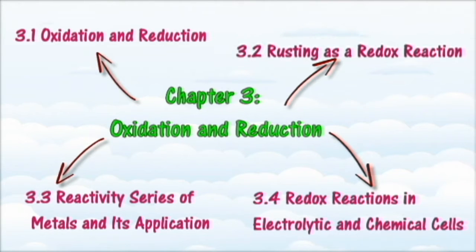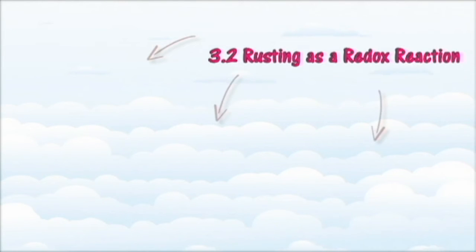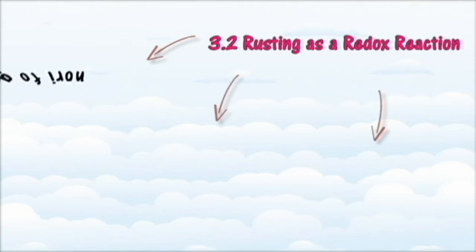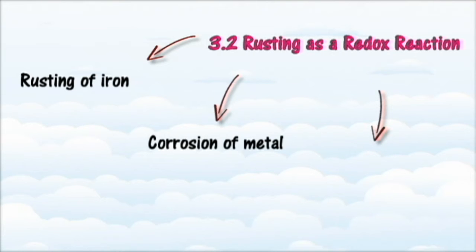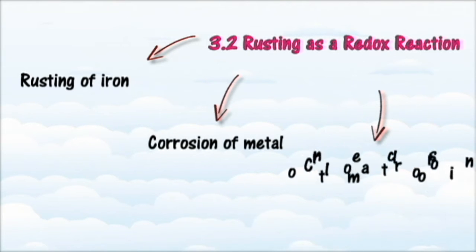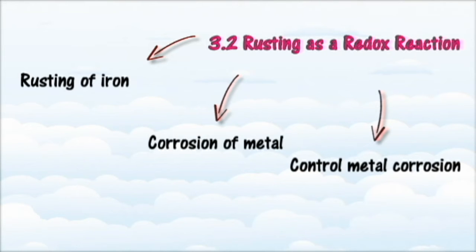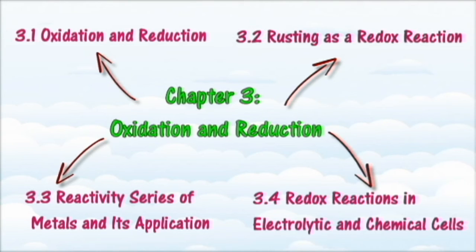In Section 3.2 we will learn about rusting as a redox reaction. At the end of this section you should be able to state the conditions for the rusting of iron, state what corrosion of metal is, describe the process of rusting in terms of oxidation and reduction, generate ideas on the use of other metals to control rusting, explain with examples the use of a more electropositive metal to control metal corrosion, and explain with examples the use of a less electropositive metal to control metal corrosion.